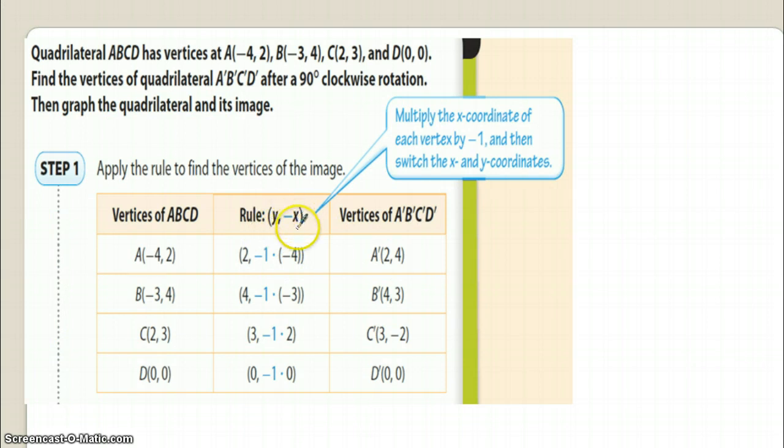So it should be y comma negative x. So let's multiply first, so we got a negative four times a negative one, that's going to give us a positive four. So now we switch these two. So once we get that we'll switch these two and it will become two comma four instead of four comma two. A little confusing at first, but if you just keep the rules handed there next to you on your little card as I was instructing you earlier you'll be okay.